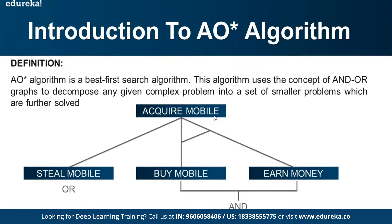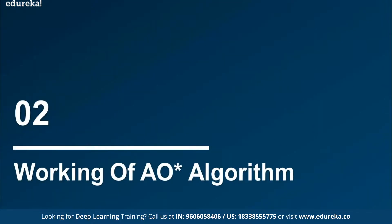For example, suppose you want to acquire a mobile phone. You can either steal the mobile or buy a mobile. To buy a mobile, you definitely need to earn money. So to acquire a mobile, you need to satisfy two conditions: buy a mobile AND have money. If both conditions are satisfied, then only can you acquire the mobile. That is the AND-OR graph problem.